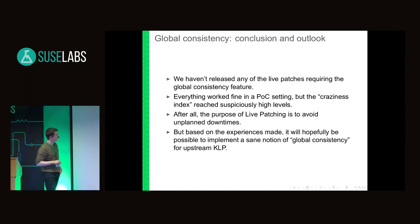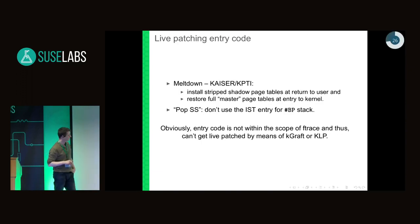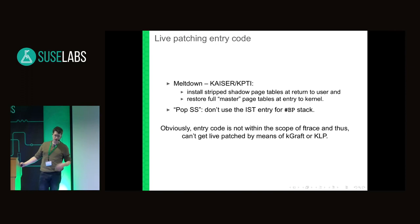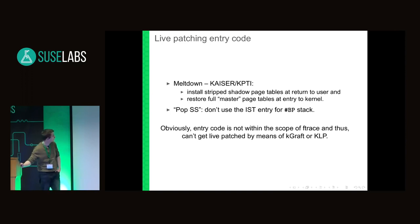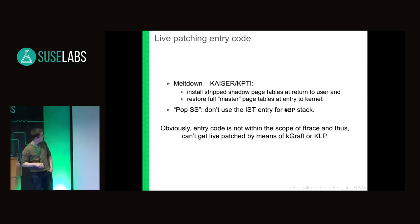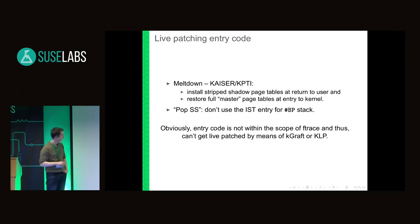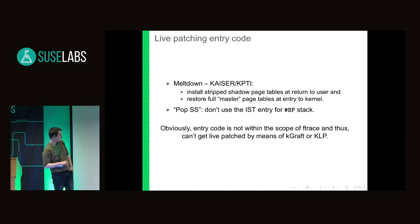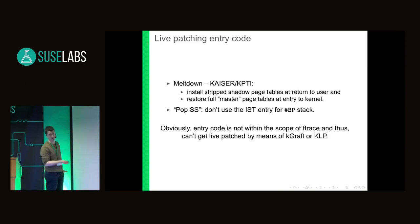The next topic is live-patching entry code, which is definitely needed for some CPU vulnerabilities. For the KPTI patch set, we had to install the shadow copy in the CR3 register at return-to-user and, more importantly, restore the kernel page tables at entry — anything else would crash. For the POP SS vulnerability, the fix was not to use the interrupt service table entry for the breakpoint stack. Entry code cannot be live-patched with KGRAFT or KLP because it's not F-traceable — it's not functions.